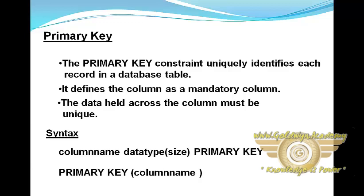A single column primary key is called a simple key and a multi-column primary key is called a composite primary key. The main function of a primary key in a table is to uniquely identify a row. We can define a primary key constraint at the column level or at the table level.